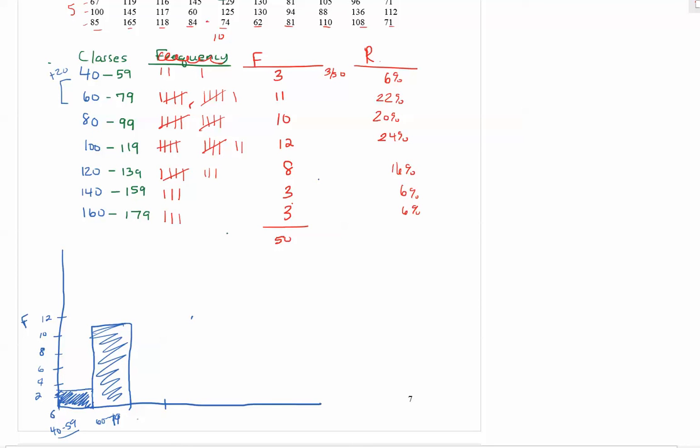My next bar is the 80 to 99 and it had a frequency of 10. So all the bars are connected to each other without any gaps, unless you have a gap in a class with zero for the frequency, then you would see a gap with the bars. My next bar is 100 to 119 and it has a frequency up to 12.